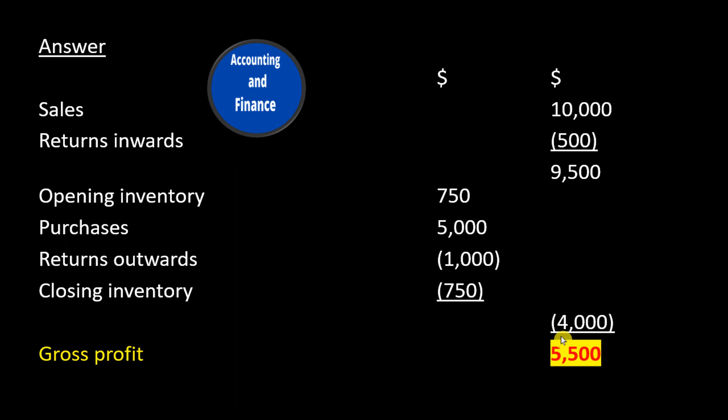Cost of goods sold: minus $4,000. Gross profit: $5,500.